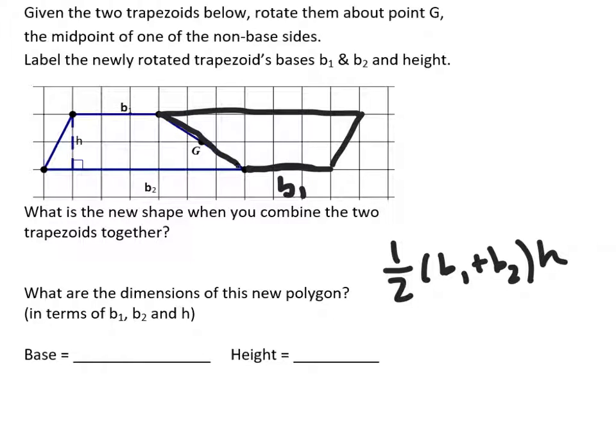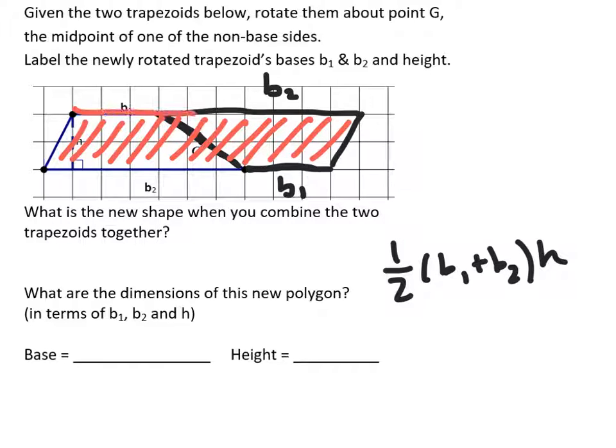If I was to take our trapezoid that is given to us, flip it on its back, I get this shape. Now this shape is one you should recognize. It's a parallelogram, isn't it? Can you see that? The opposite sides are parallel and there it is. Nice big parallelogram.